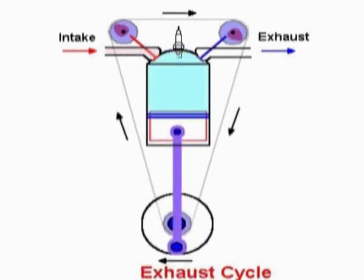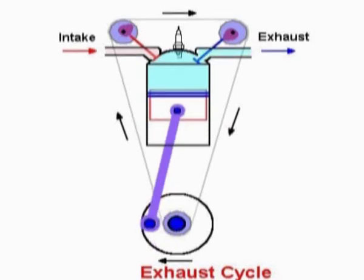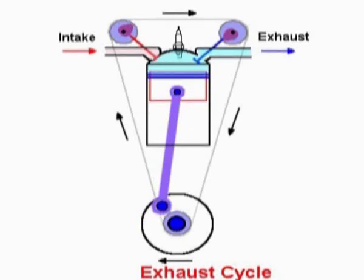And then, the last cycle, it pushes the exhaust burnt gas upwards, compresses it, then opens up the exhaust valve, and the gas comes out, the exhaust gas carbon monoxide.